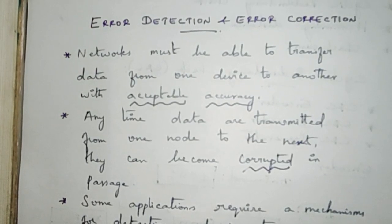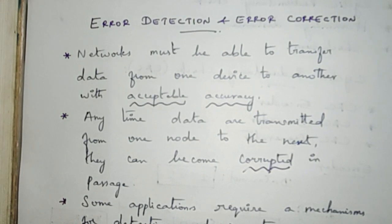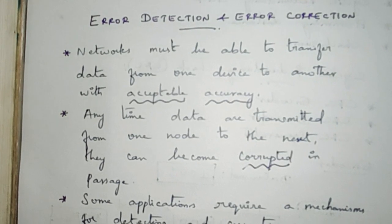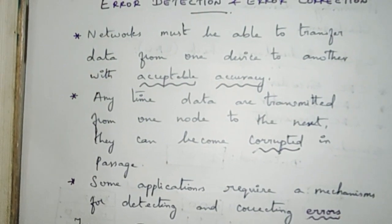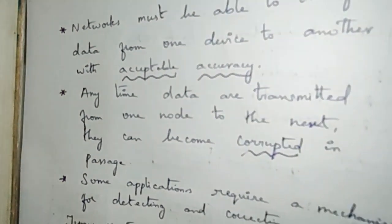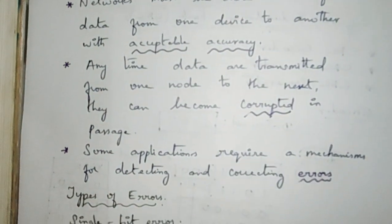Hello, this is Bruschi and today we are going to see about error detection and error correction in the computer communication subject. In networks we need to transmit data from one point to another point with acceptable accuracy. Anytime data is transmitted from one node to another it can become corrupted, so we need some mechanism to detect and correct errors.